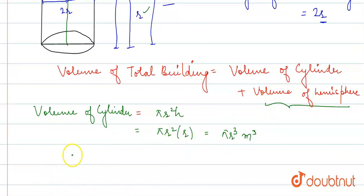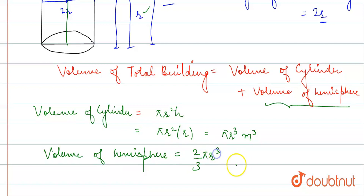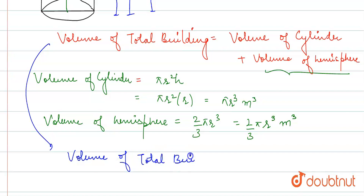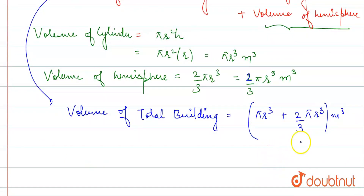Now we will take a look at volume of hemisphere. Volume of hemisphere is 2/3 pi r cubed. Then volume of total building equals pi r cubed plus 2/3 pi r cubed. Taking pi r cubed common: 1 plus 2/3 equals 5/3, so total volume equals 5/3 pi r cubed.